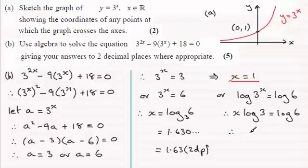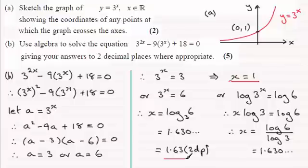Next, we would want to divide both sides by log of 3. So x equals the log of 6 divided by the log of 3. Check that out on your calculator. And you should again find you get 1.630 and so on. Which, when rounded to 2dp, is 1.63. So that's your other answer then.